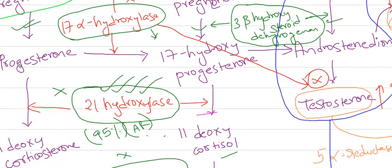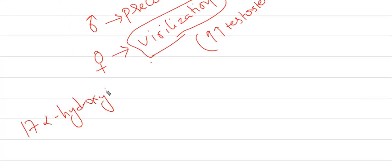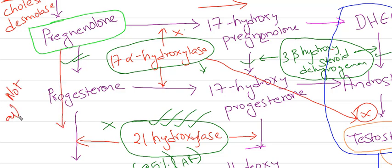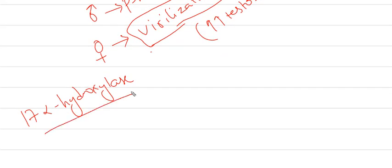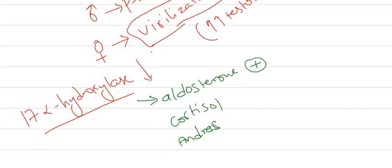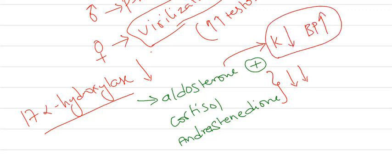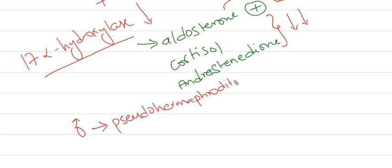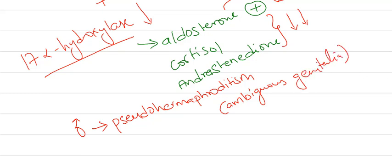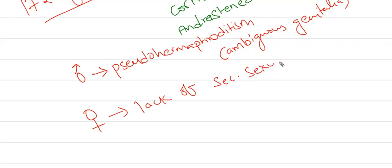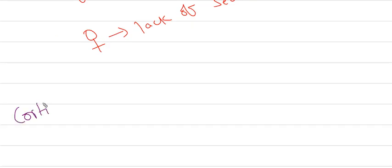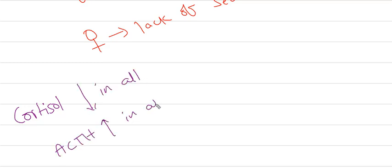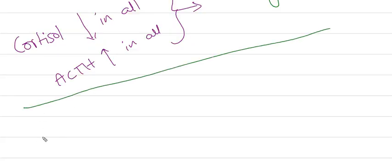In 17-alpha hydroxylase deficiency, testosterone is not formed. The aldosterone pathway is unaffected, but the cortisol and testosterone pathways are affected. Therefore, aldosterone is present but cortisol and androgens are decreased. This leads to decreased potassium and increased blood pressure. In males, pseudohermaphroditism with undescended testes and ambiguous genitalia can be seen. In females, there is a lack of secondary sexual characteristics due to absent androgen production. Cortisol decreases in all cases, causing ACTH to increase, which leads to enlargement of the adrenal gland.